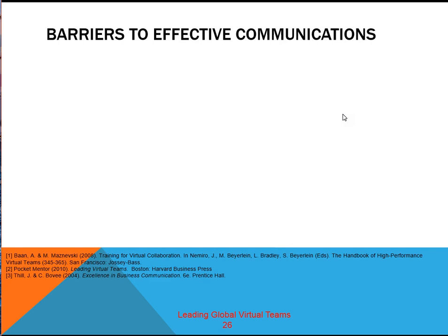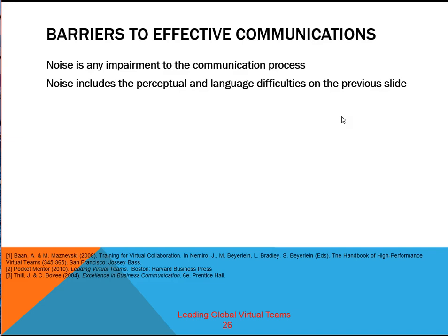Communications is successful only when the receiver understands the message. Communication barriers block the intended meaning of the sender. Noise is any impairment to the communication process, including perceptual and language difficulties. Any step in the communication process can be blocked by interference or noise. Noise can be caused by communication barriers including perceptual and language differences, restrictive environments, distractions, deceptive communication tactics, and information overload.